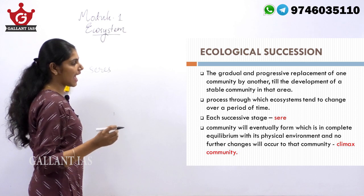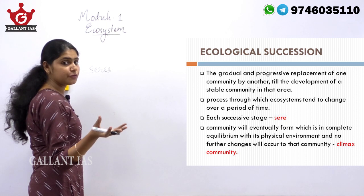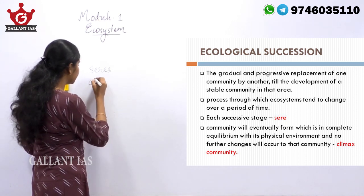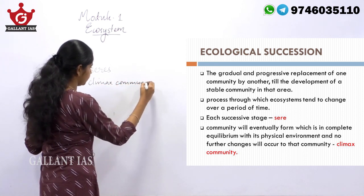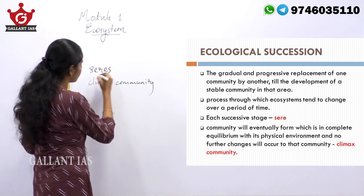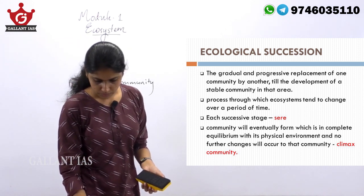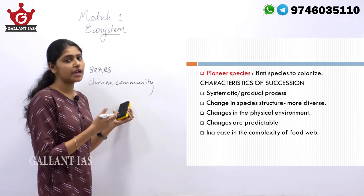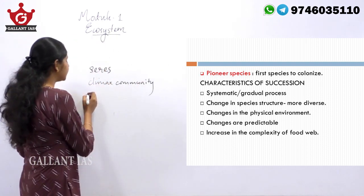The successive stages are known as sere, and the community which is eventually formed and is in equilibrium with the environment — that stable community is known as the climax community, formed at the end of succession. Once the climax community is reached, no further changes will occur for that community.